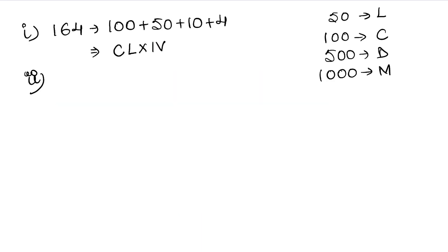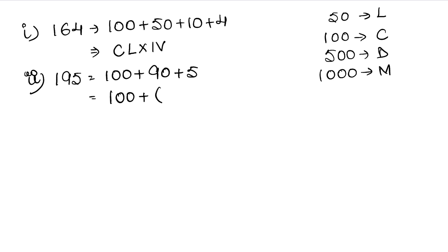The second part is 195. How do we write 195? We can write it as 100 plus 90 plus 5. Now, 90 is written as 100 minus 10, which is XC. So 100 we write as C, 90 as XC, and 5 was V. This gives us CXCV. This is the answer.